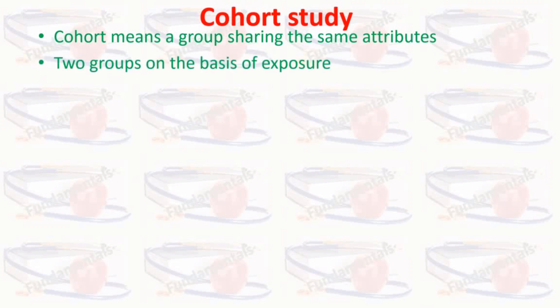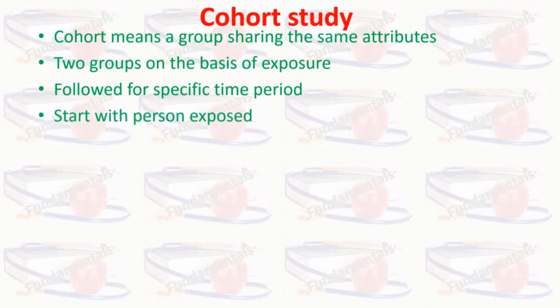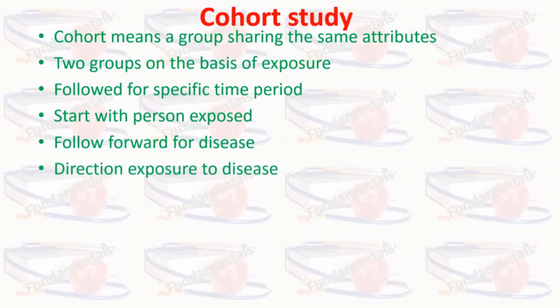The focus is on risk factors. In a cohort study design, two groups are made on the basis of exposure — for example, smokers and non-smokers. These groups are followed for a specific period of time for the outcome of interest, and the outcome of interest in these studies is disease. The study starts with persons exposed and follows forward for disease — maybe for one year, three years, or ten years. The direction is from exposure to disease.